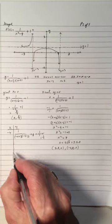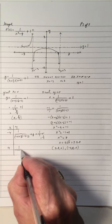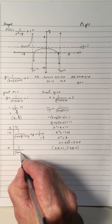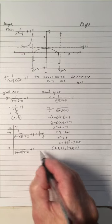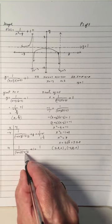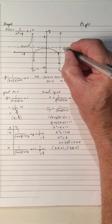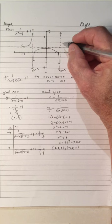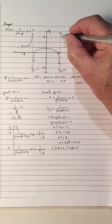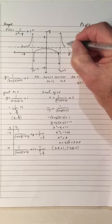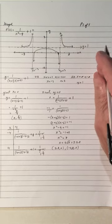Let's also plug in x equals 4 on this side. We get 1 over (4+3)(4-3) plus 1, which is 1 over 7 times 1 plus 1, giving 1 and 1/7. So x equals 4 gives y equals 1 and 1/7, which is right here. As x approaches infinity, y approaches 1, so the graph is approaching 1. There's the graph representing this function.